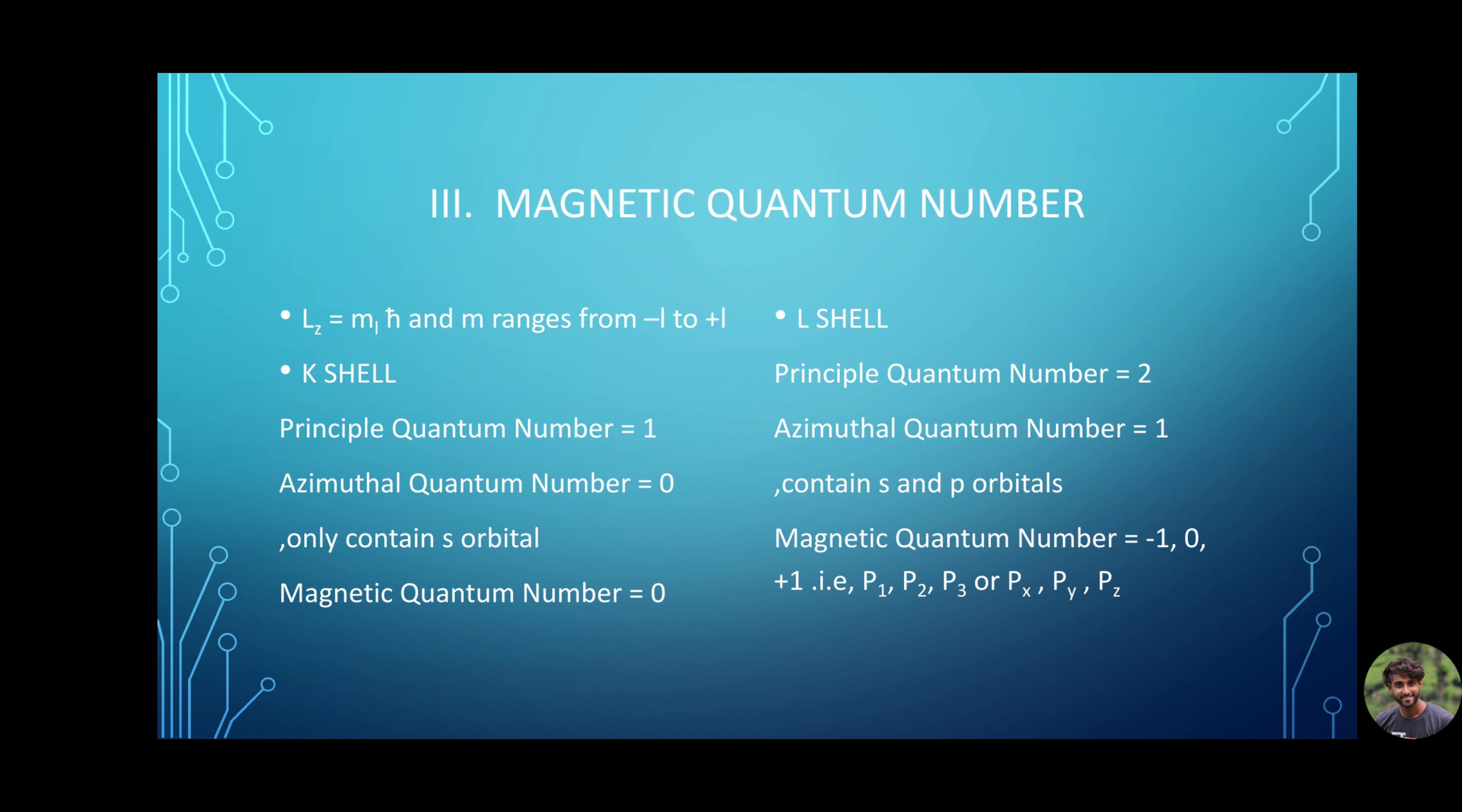L shell. L shell has principal quantum number 2 and azimuthal quantum number 1. Thus, magnetic quantum number equals -1, 0, +1. Now, what does that mean? L has an s orbital with m = 0 and a p orbital with m = -1, 0, +1. That is, px, py, pz or p1, p2, p3.